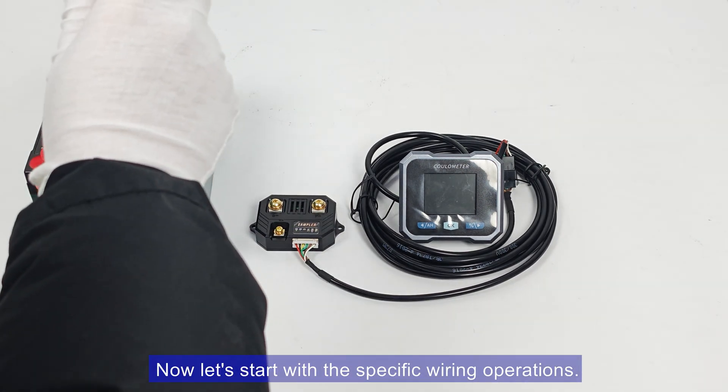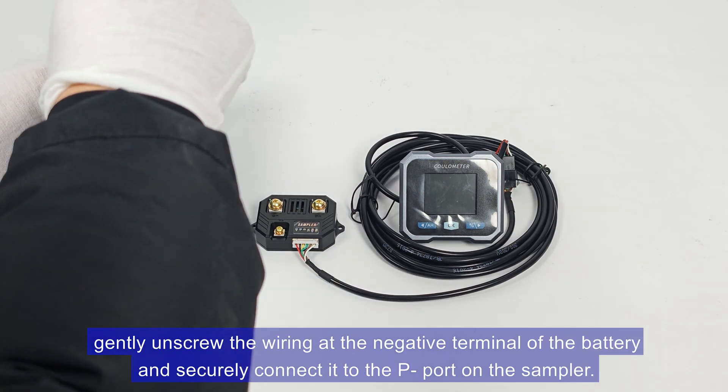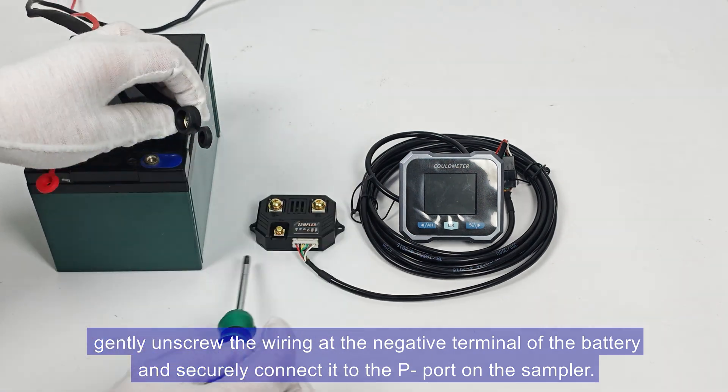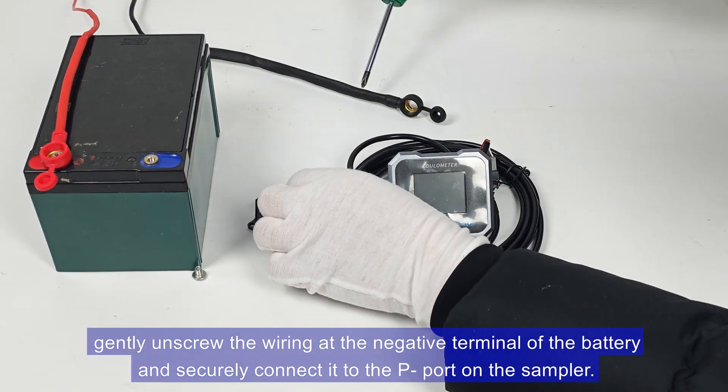Now, let's start with the specific wiring operations. First, gently unscrew the wiring at the negative terminal of the battery and securely connect it to the P port on the sampler.